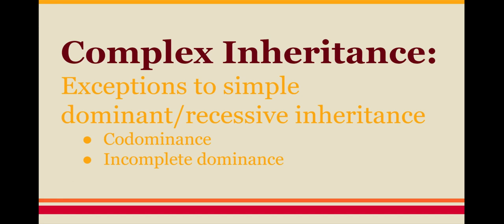Up until now, we've said a dominant version will always express itself in the phenotype if it's present. Our first foray into complex inheritance is going to look at patterns that bend that simple dominant-recessive inheritance — co-dominance and incomplete dominance. When we get into mixed practice, unless you are explicitly told in the question that a trait follows co-dominance or incomplete dominance, or you can infer it from the phenotype, please do not assume every genetics problem follows complex inheritance.